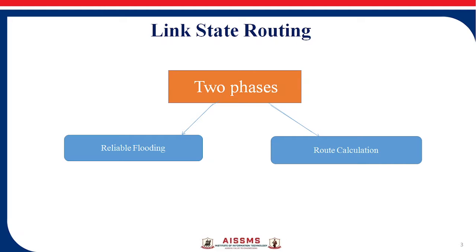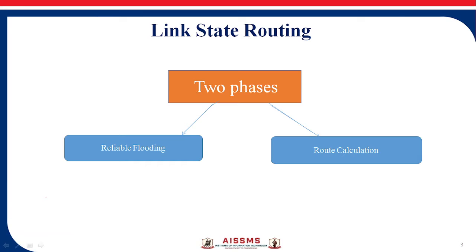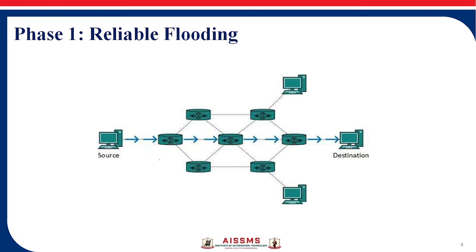Before going to start, I will explain the meaning of flooding. So here is an example of flooding. The meaning of flooding is: after a node finds out its link state information, it will flood that information to the entire network. That is flooding.